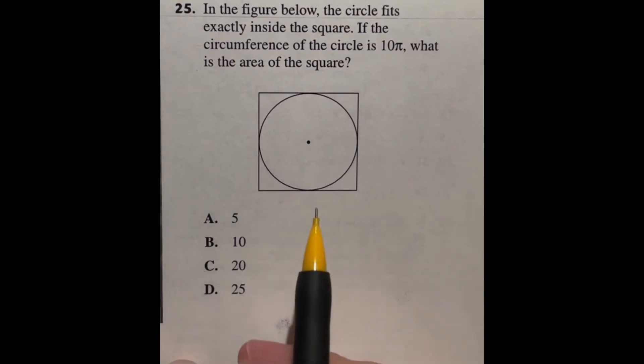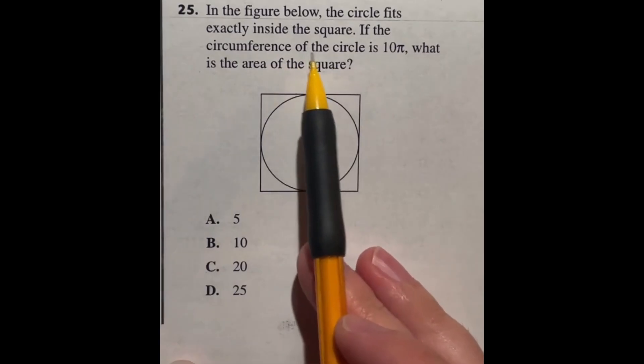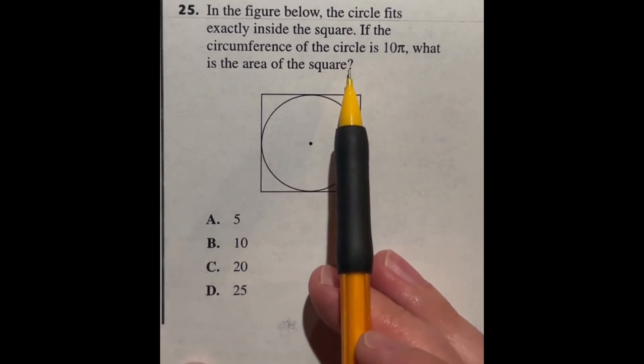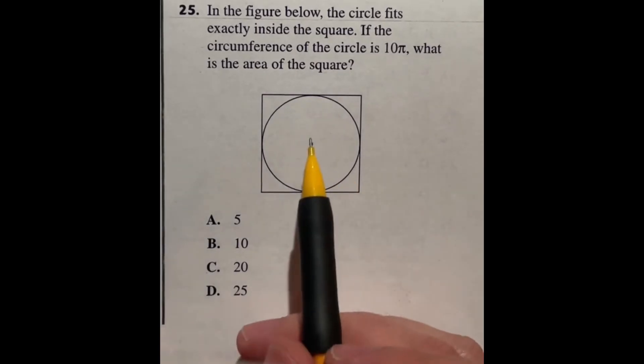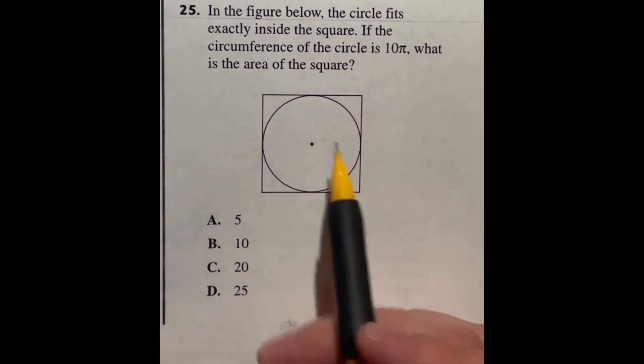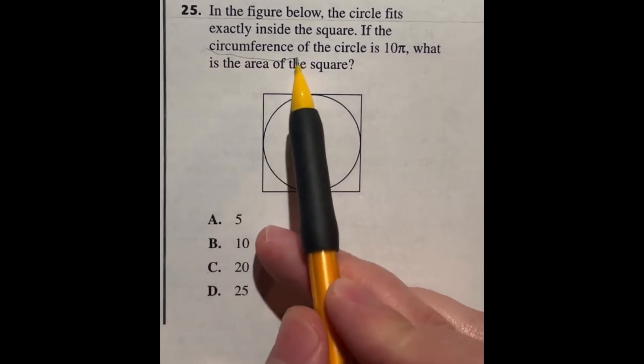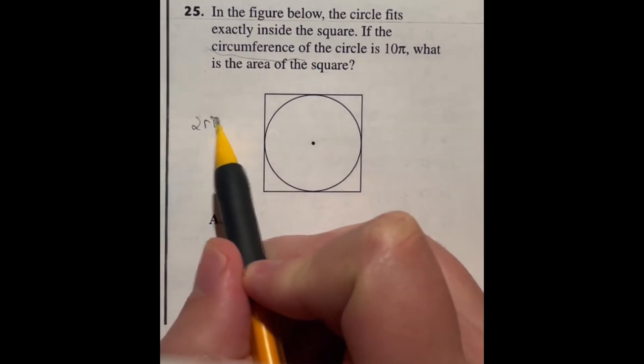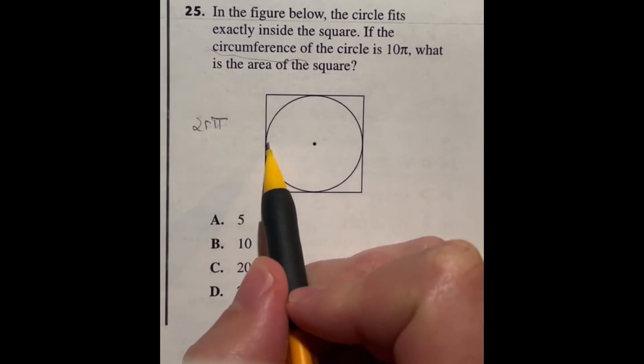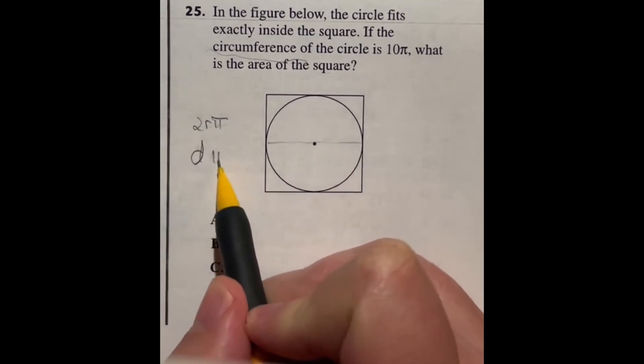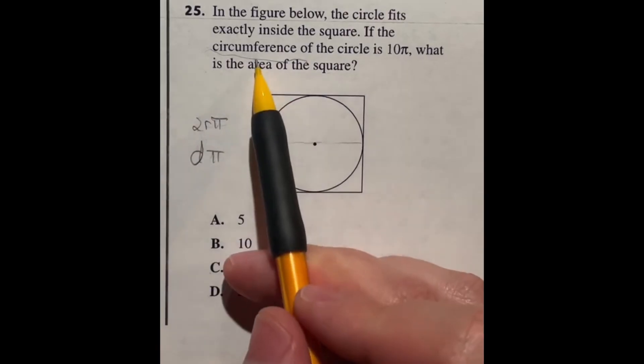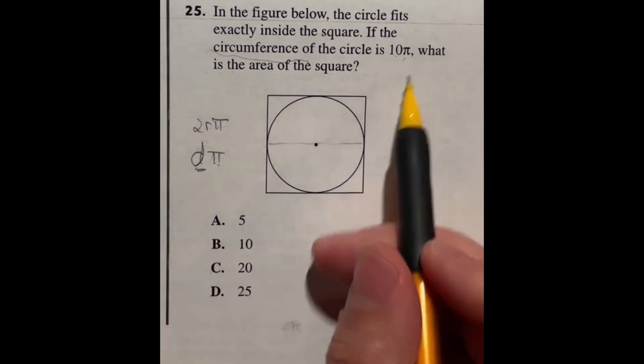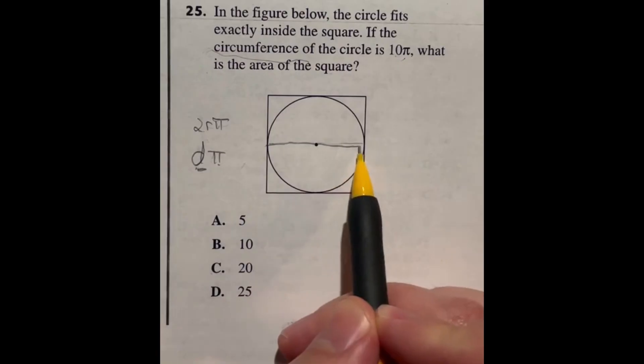You got to be careful in these practice tests, y'all. It says here in the figure below the circle fits exactly inside of the square. If the circumference of the circle is 10 pi, what is the area of the square? So multiple things you would need to know here. Number one, you need to know that the formula for a circumference is one of two things. I've seen it as two times the radius times pi. Or you could just say, well, two times the radius is just the whole way across. So that's the diameter times pi. So in this case, if they said the circumference is 10 pi, then that means 10 is the diameter, and then you have that pi. So that means from here all the way across is 10.